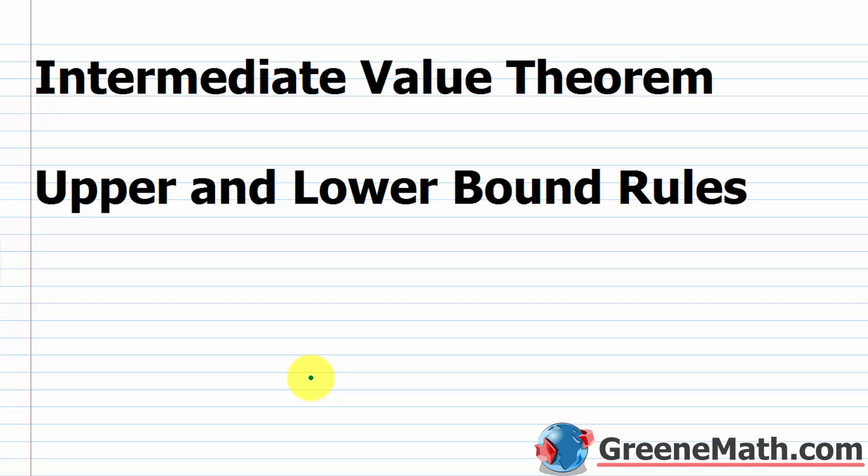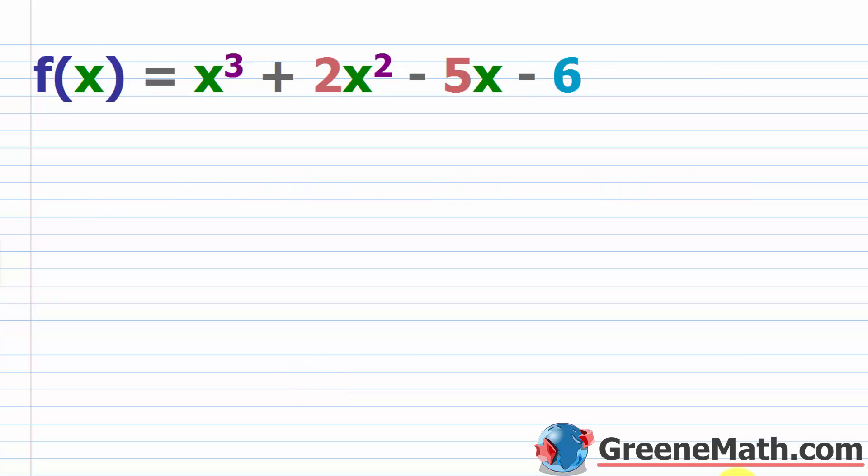In this lesson, we want to talk about the intermediate value theorem. We also want to look at the upper and lower bound rules. Let's start with something that's very simple, known as the intermediate value theorem. Basically, this can help us to determine if a zero lies between two numbers.